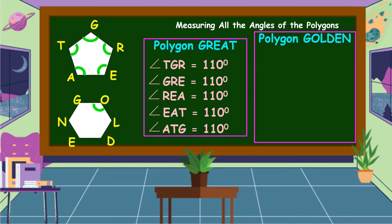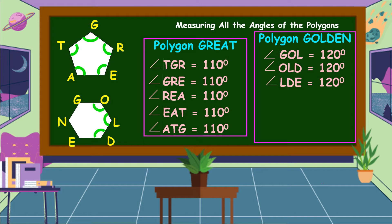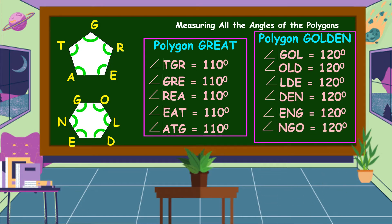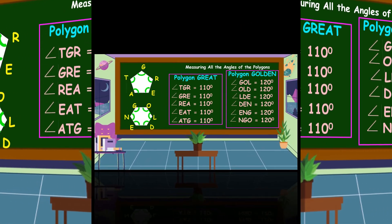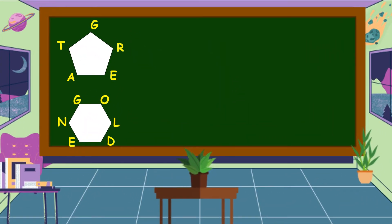For polygon GOLDEN, angle GOL measures 120 degrees, angle OLD measures 120 degrees, angle LDE measures 120 degrees, angle DEN measures 120 degrees, angle ENG measures 120 degrees, and angle NGO also measures 120 degrees. What conclusion can we make about the two polygons?